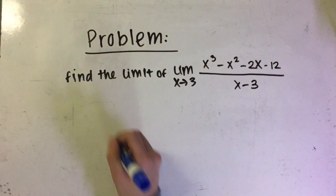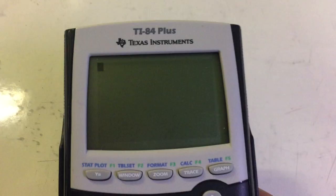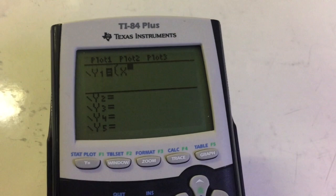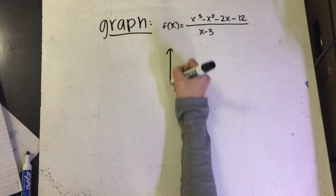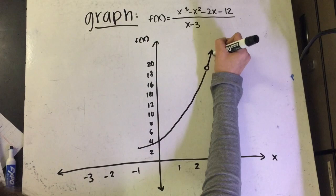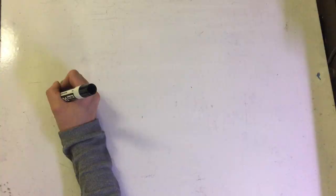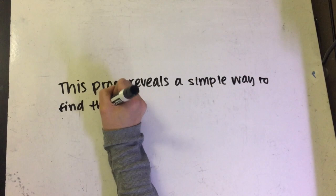We can check our answer by graphing it on our calculators. The graph shows that there is a vertical asymptote at x equals 3 and that the graph is approaching the same value of f(x), which is 19, from both the left and the right as x is approaching 3. This proof reveals a simple way to find a limit of the indeterminate form 0 over 0 by using synthetic substitution.